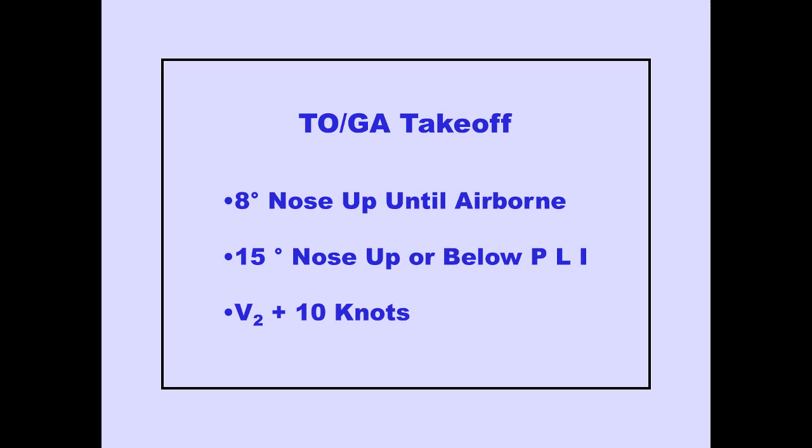During takeoff, the TOGA pitch mode commands 8 degrees nose-up until airborne. When airborne, pitch commands change to the lesser of 15 degrees nose-up or slightly below PLI. As climb rate increases, pitch commands change to maintain the MCP IAS Mach window speed plus 10 knots. This speed is V2 for takeoff.